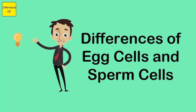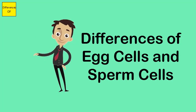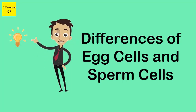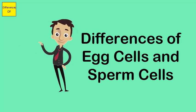Egg cells can be effortlessly destroyed, while sperm cells can't be easily destroyed. As for similarities, both cells are needed for conception, and both fit in with each other.